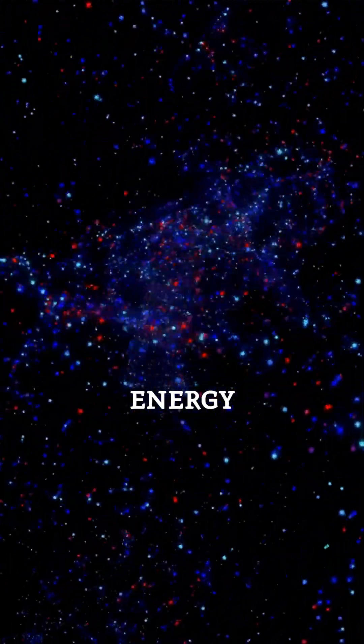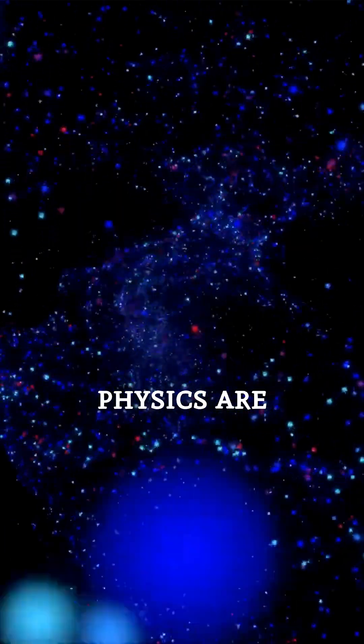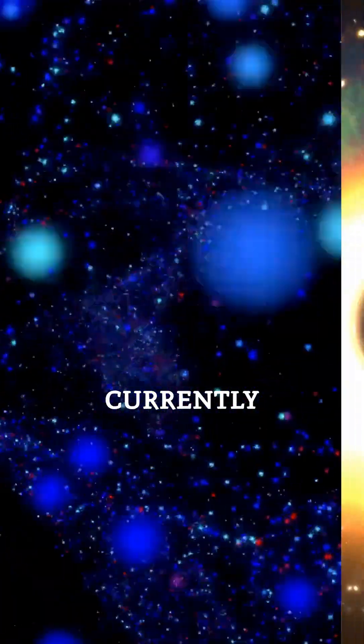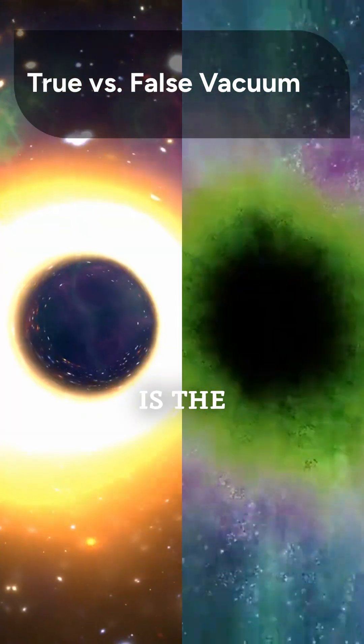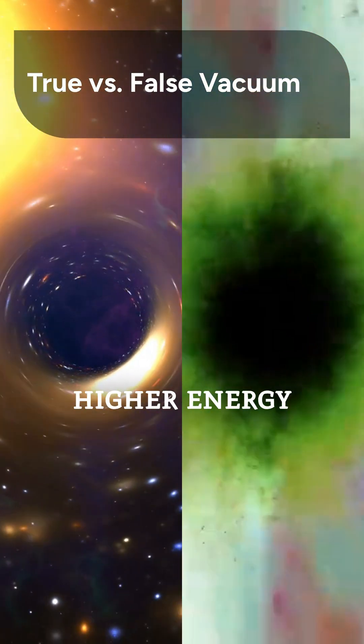Think of the universe's energy landscape as a topography with peaks and valleys. The laws of physics are set by which valley, or vacuum state, the universe currently occupies. We are concerned with two types of valleys: the true vacuum, which is the absolute lowest energy state, and the false vacuum, a temporarily stable but higher energy state.